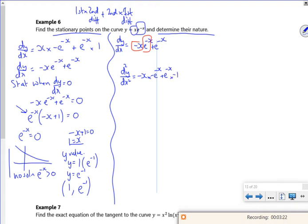Which gives me x e to the minus x minus e to the minus x, but then I've missed off this e to the minus x, which is a minus e to the minus x.